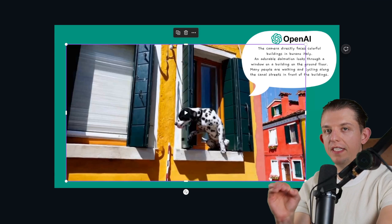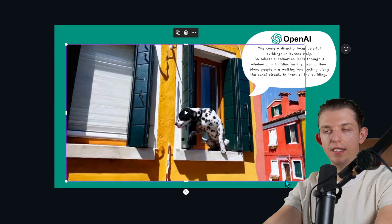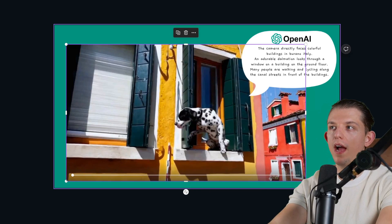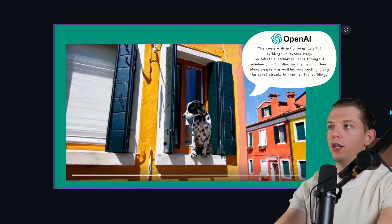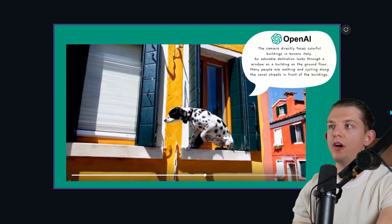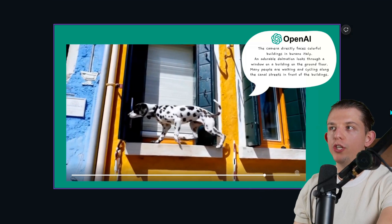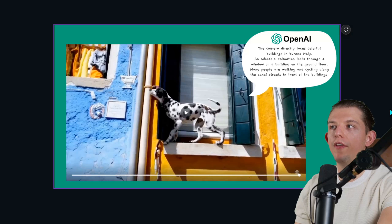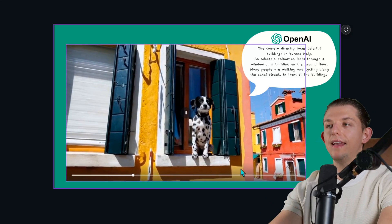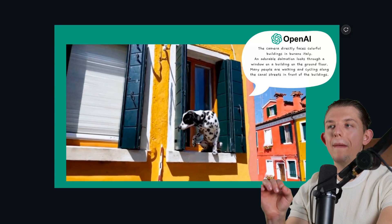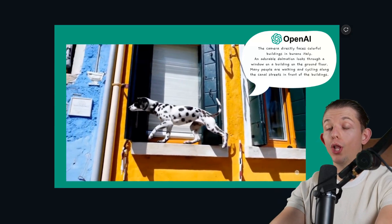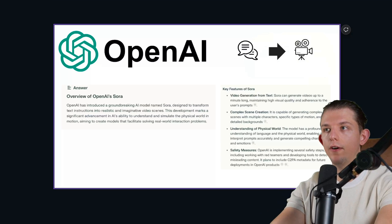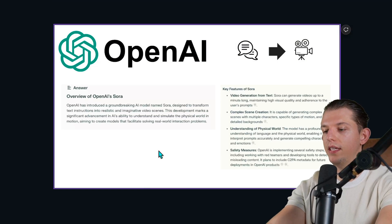Let's take a look at the first example and then we'll dive into some of the details. The prompt is: the camera faces colorful buildings in Burano, Italy. An adorable Dalmatian looks through a window on a building on the ground floor. These can actually generate up to a minute-long video. We're going to go through a lot more examples, but first let's take a dive into some of the details.